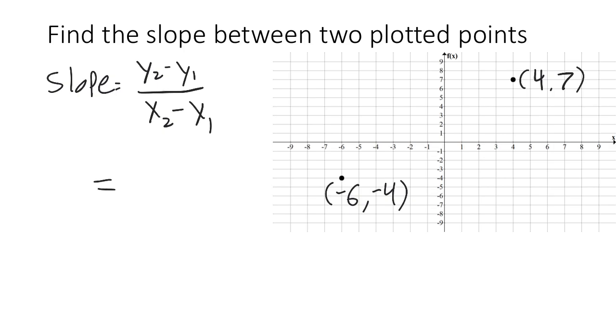Now, in our case, it doesn't really matter which one we choose for y1 and which one is y2. I'll start with the 7 from the second point. 7 minus negative 4 over 4 minus negative 6. And we can evaluate this as long as we're careful with the signs. 7 minus negative 4 is 7 plus 4, which is 11.